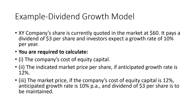Example — Dividend Growth Model. XY Company's share is currently quoted in the market at $60. It pays a dividend of $3 per share. An investor expects a growth rate of 10% per year. You are required to calculate: 1, the company's cost of equity capital; 2, the indicated market price per share if the anticipated growth rate is 12%, while the current growth rate is 10% per annum and dividend of $3 per share is to be maintained.